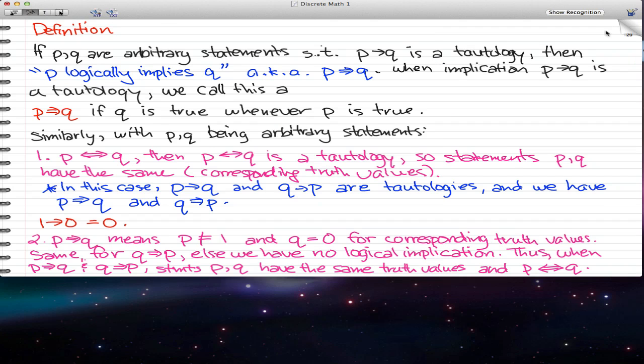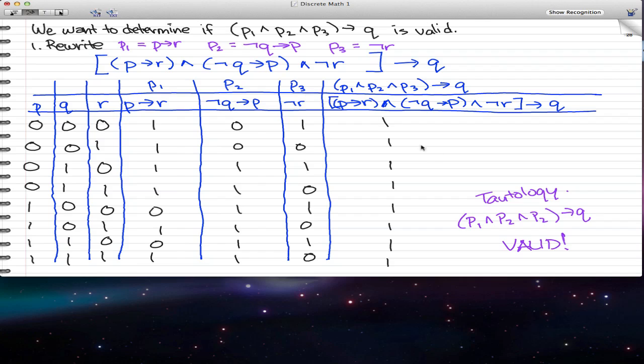In the next page, we got a definition and this really explains what happened in this example. If P, Q are arbitrary statements such that P implies Q is a tautology, which we did find because we found that this whole P1 and P2 and P3 implies Q, we found that that's a tautology.